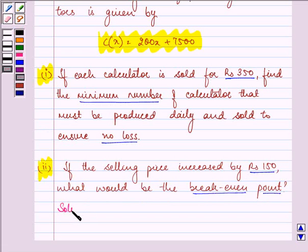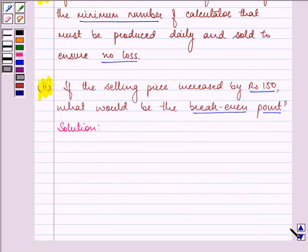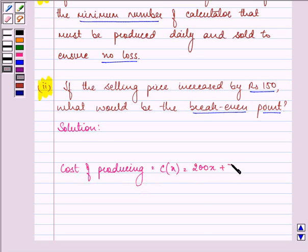So, let us proceed with our solution. Now, let x calculators are produced in a day. We are given the cost of producing these x calculators as the cost function C(x) = 200x + 7500.